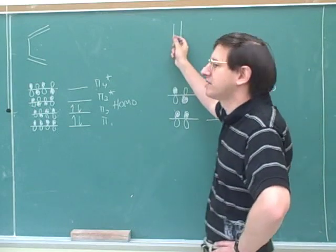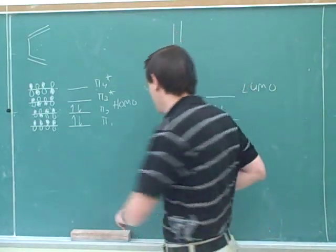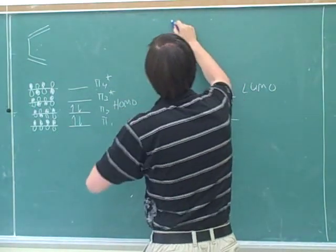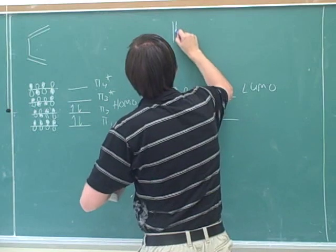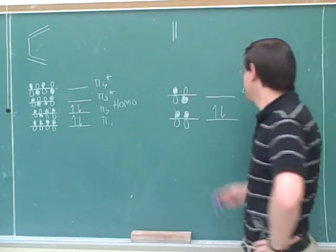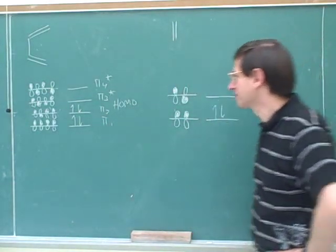Because we saw that we're treating the dienophile as an electrophile — it's going to receive electrons. Remember that we saw last time that we should think of the diene as the nucleophile; it's the one that's donating electrons. So what's the best place to put electrons in? The lowest unoccupied state.